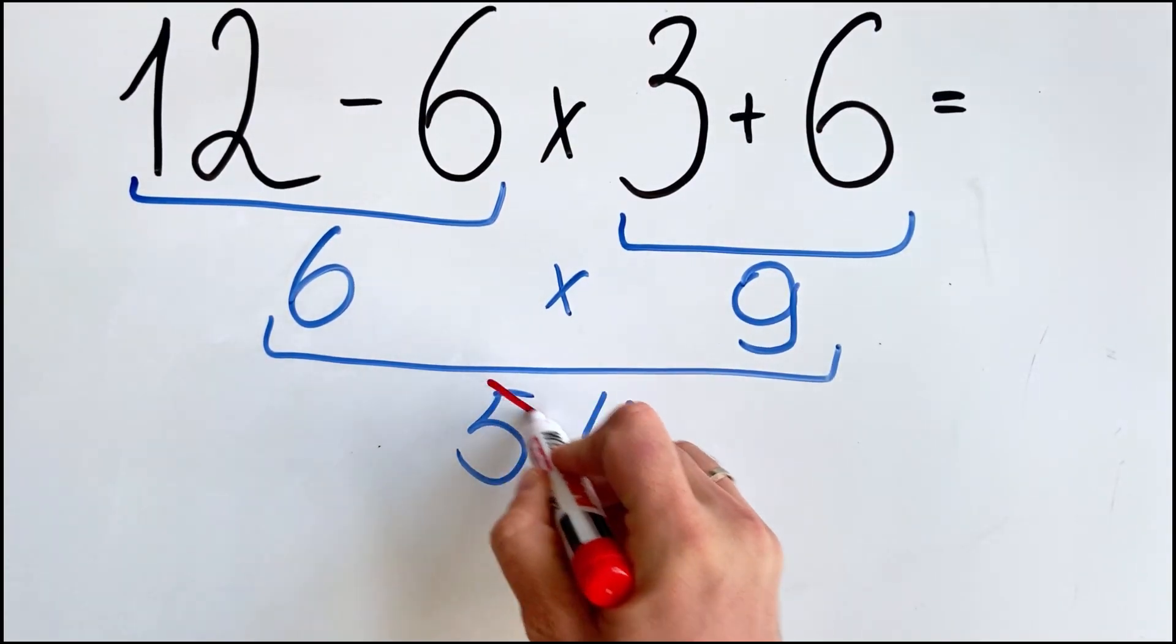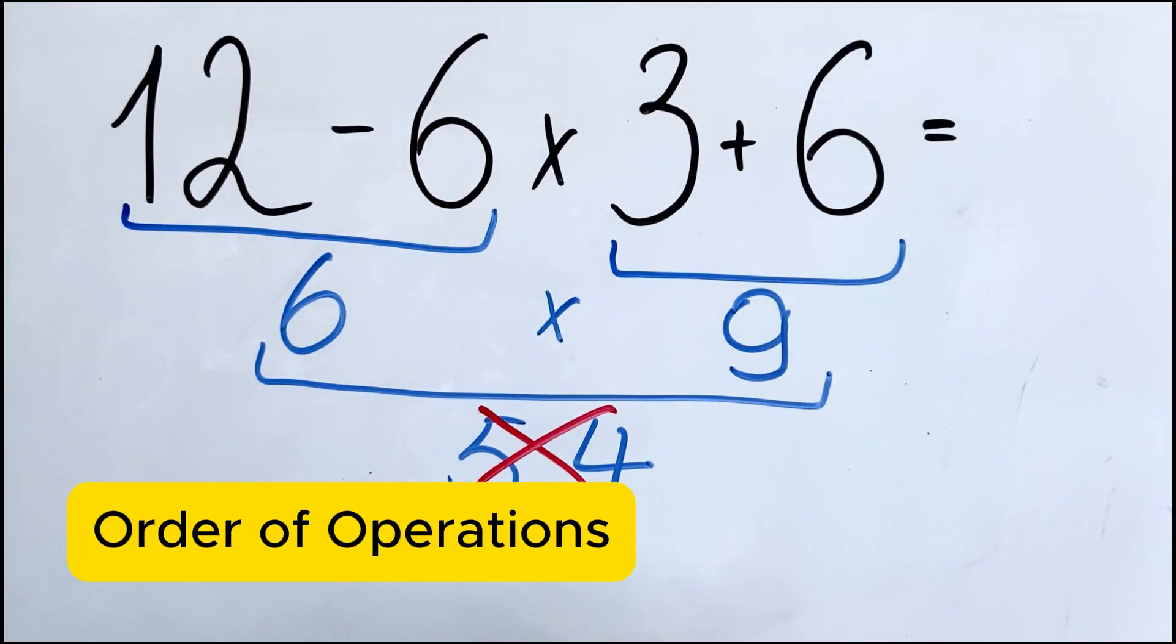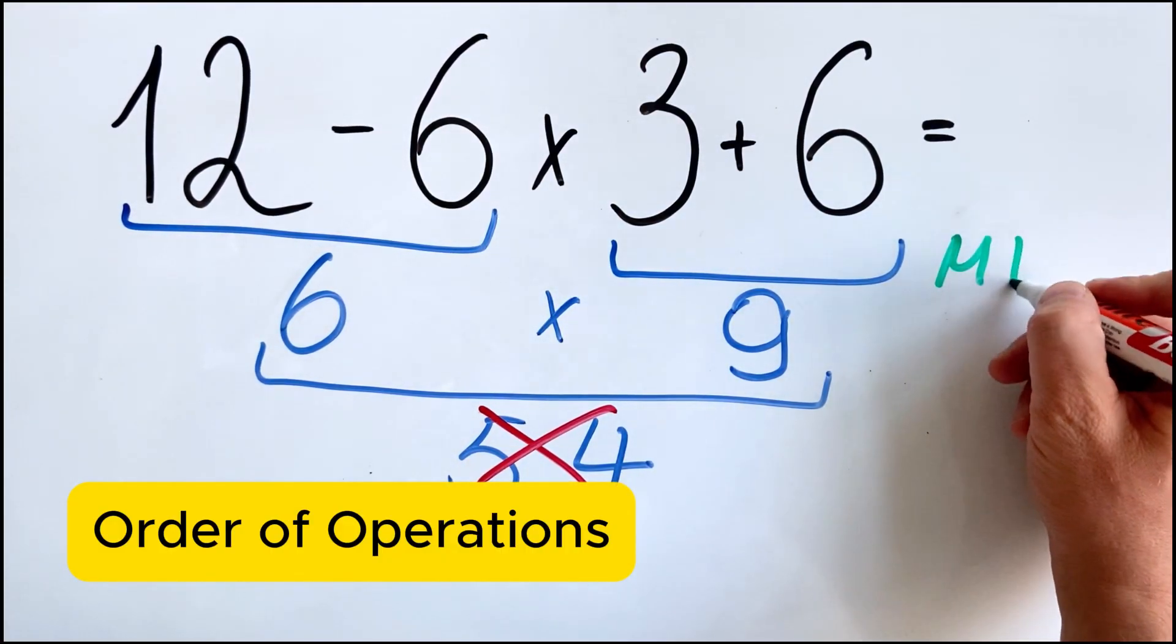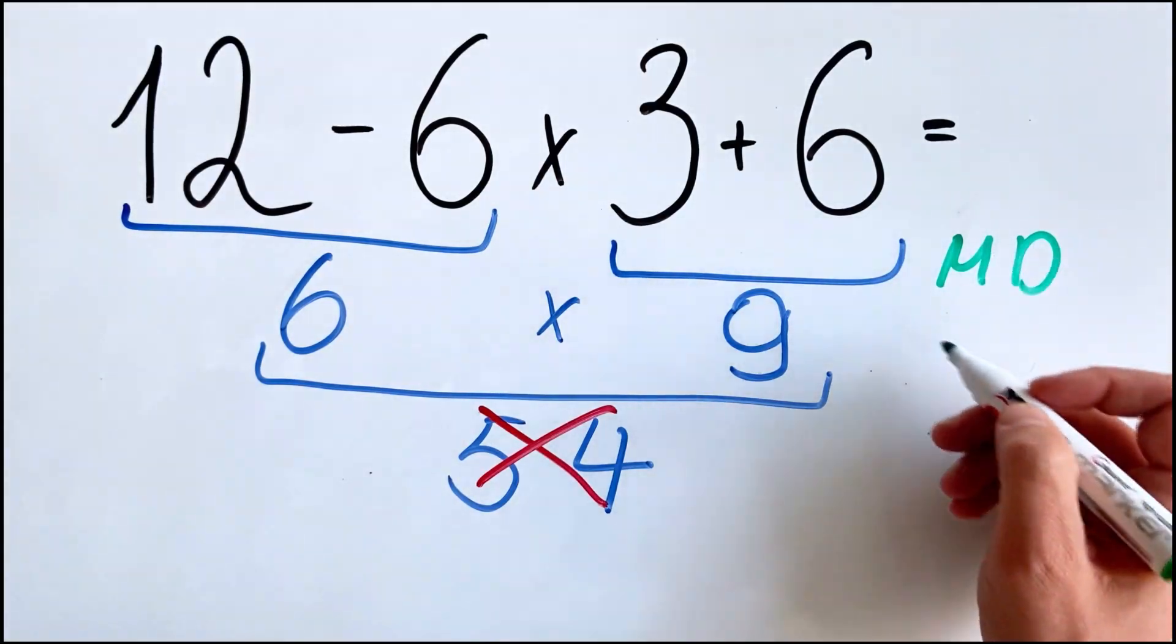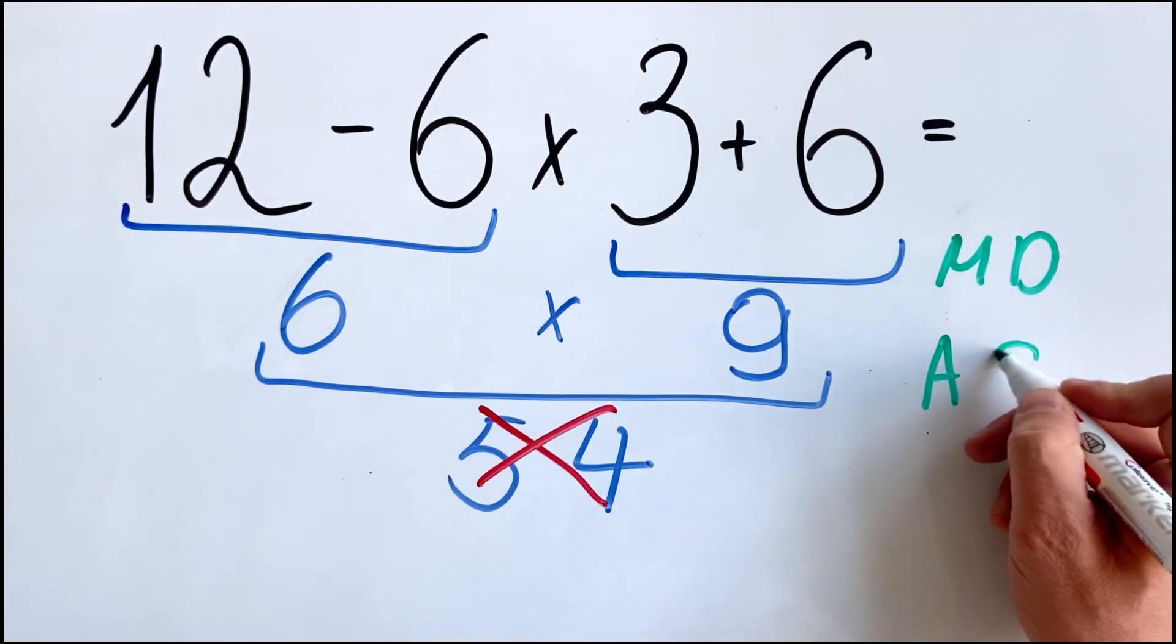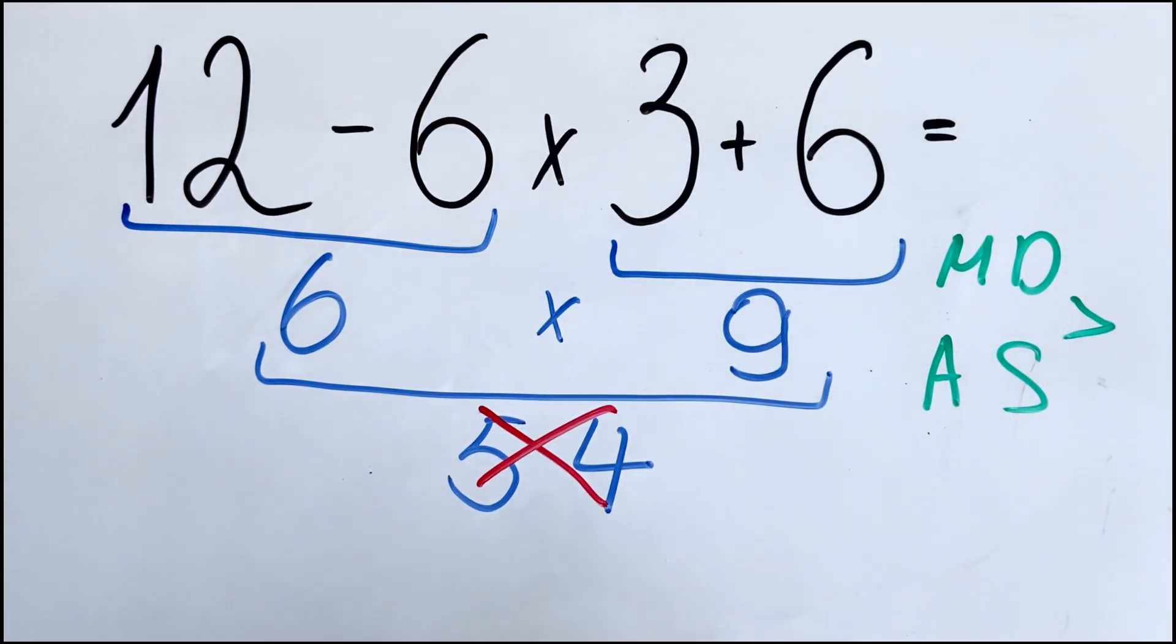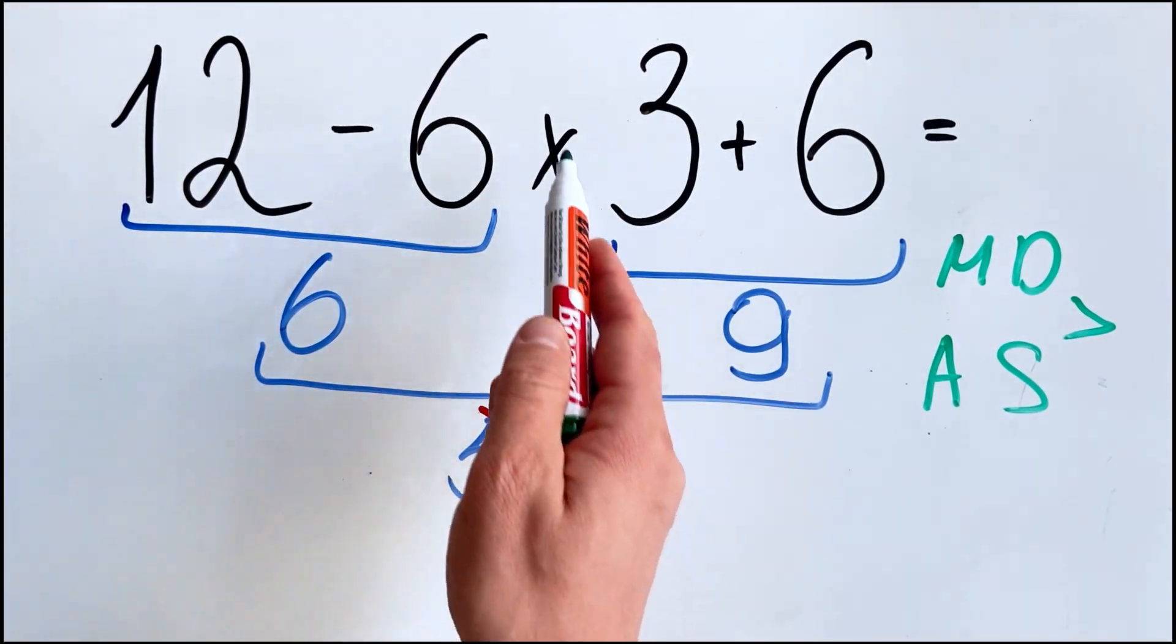But this answer is not correct because according to the order of operations, multiplication and division have higher priority over addition and subtraction. So in our case we have multiplication.